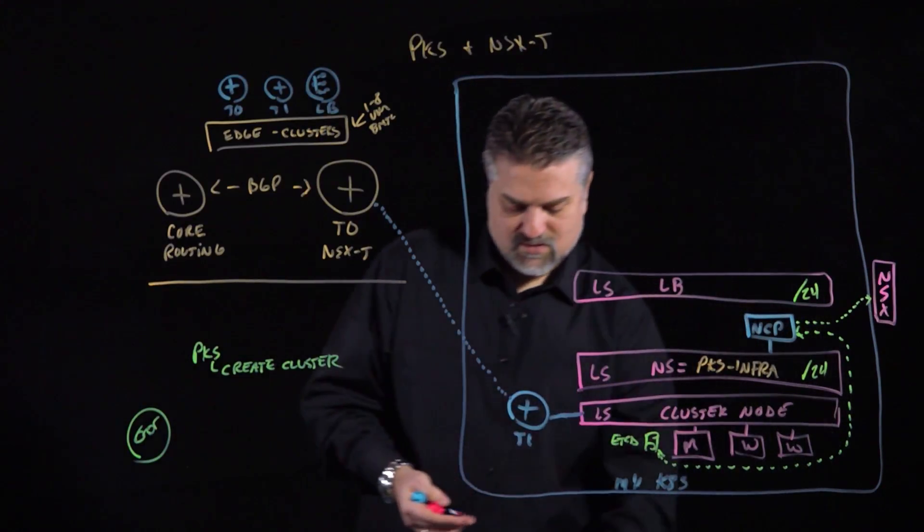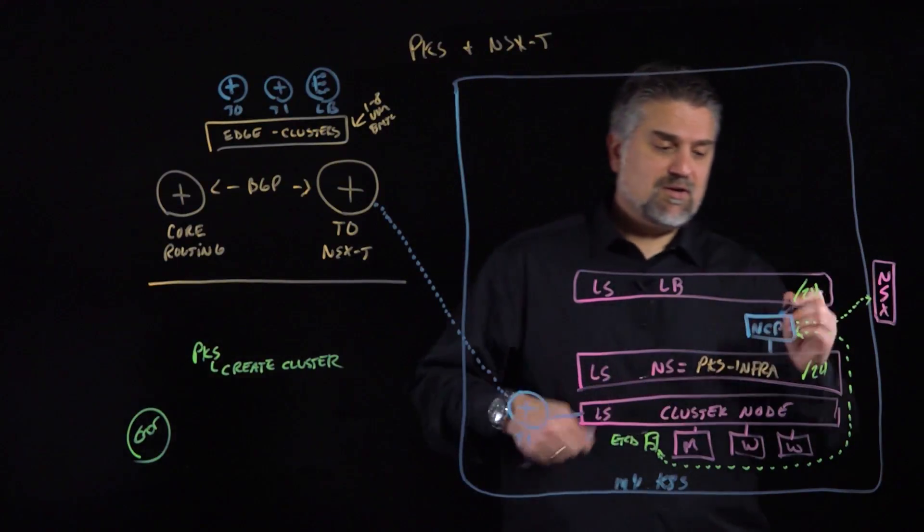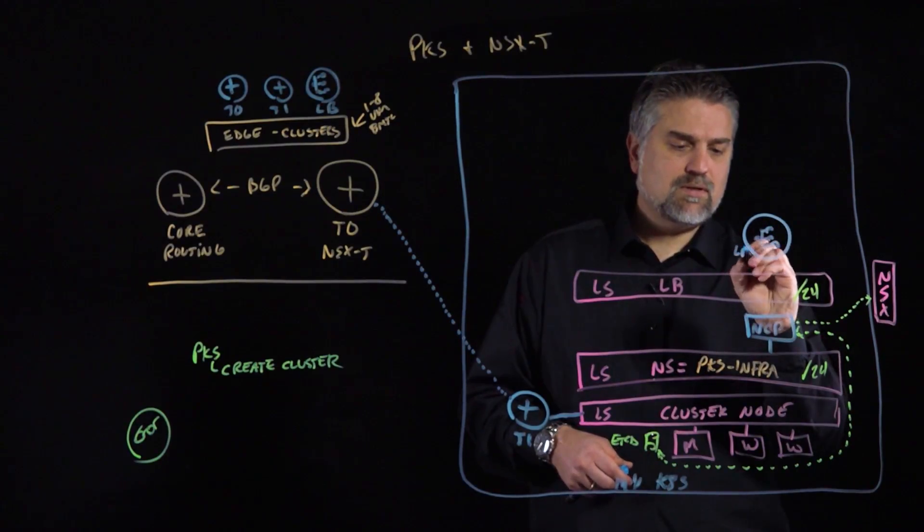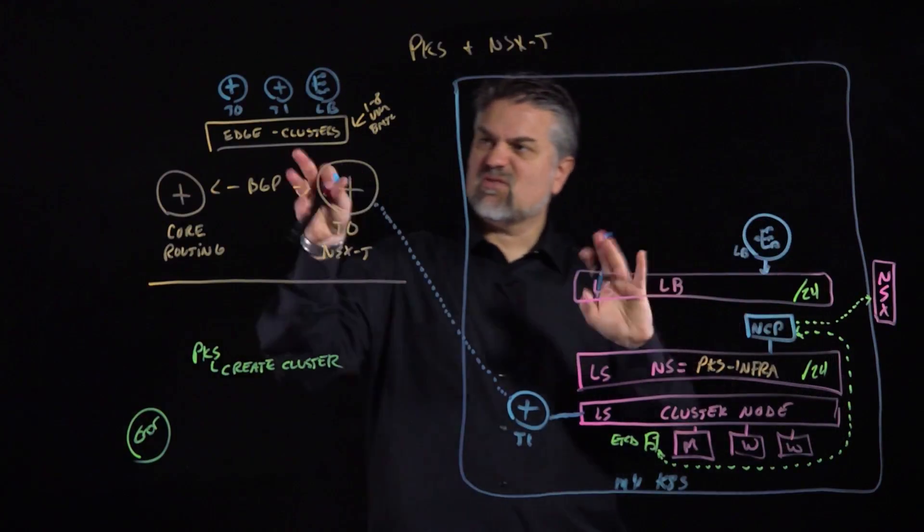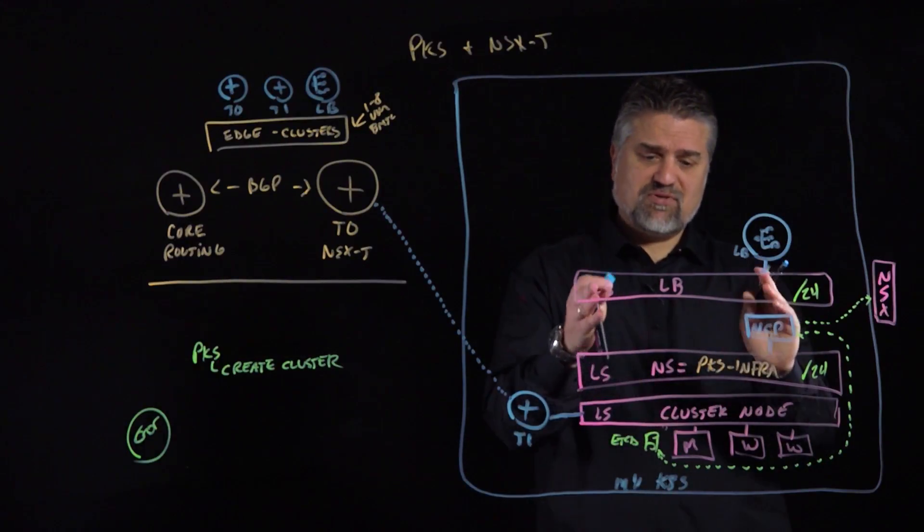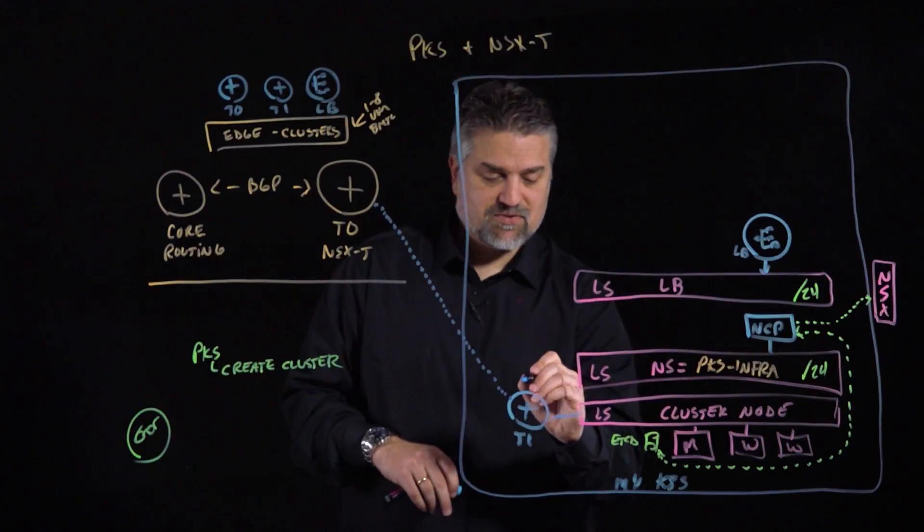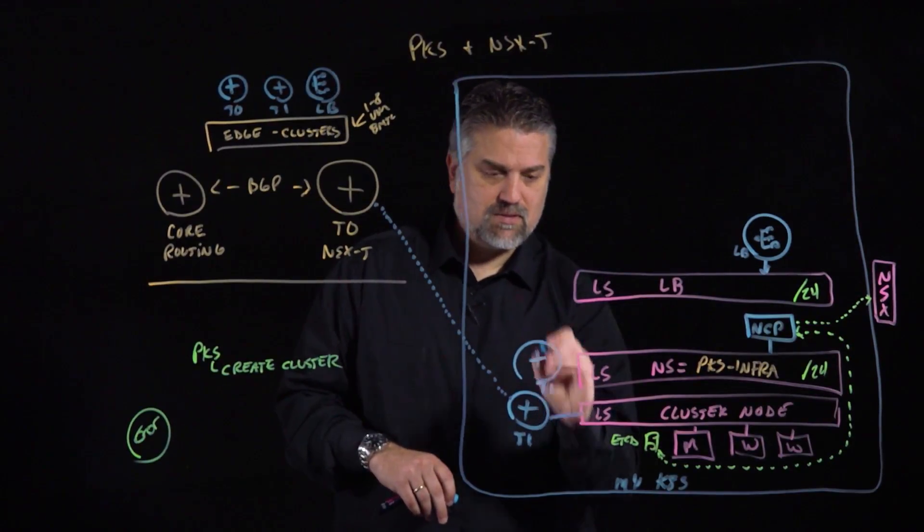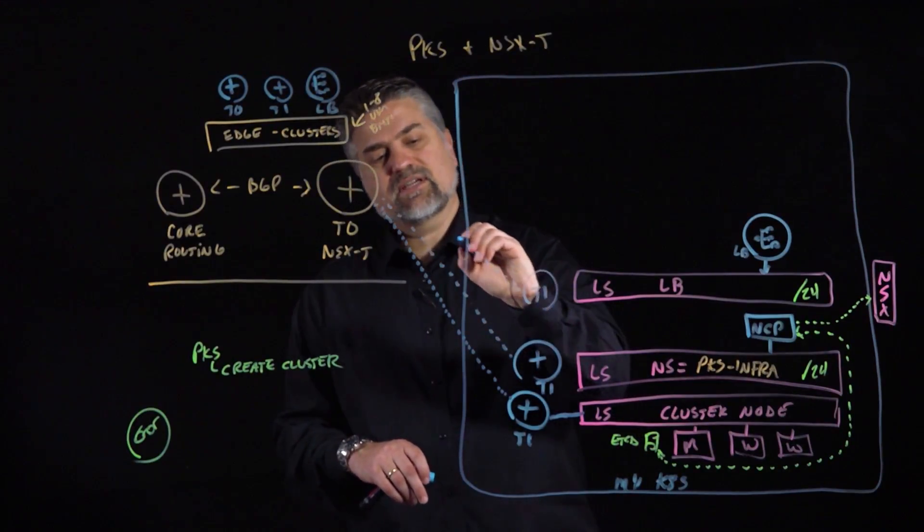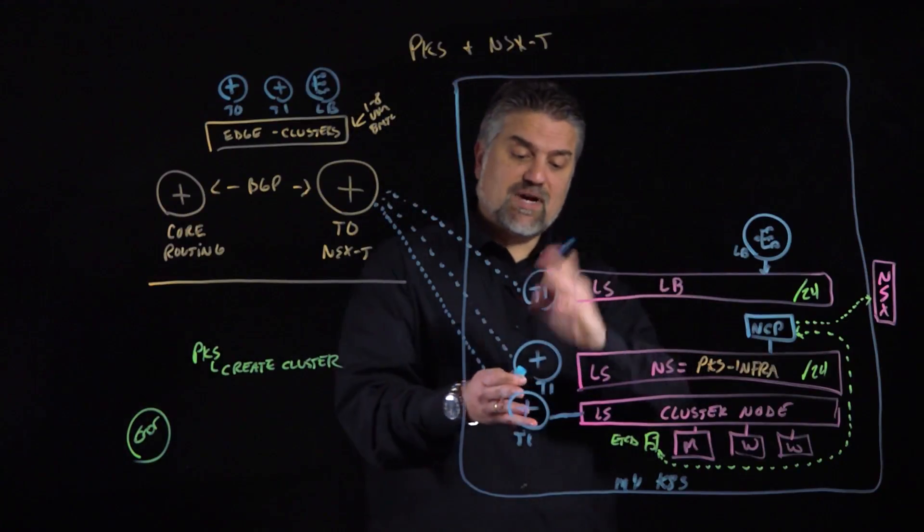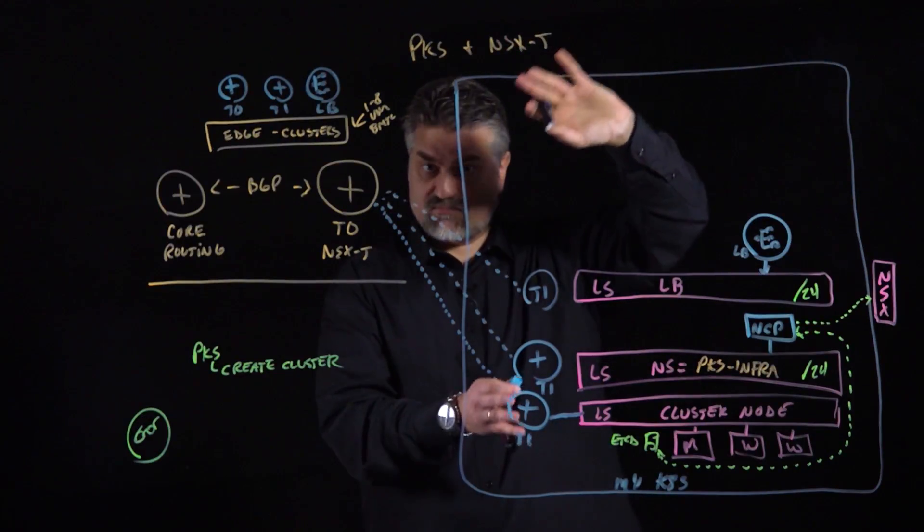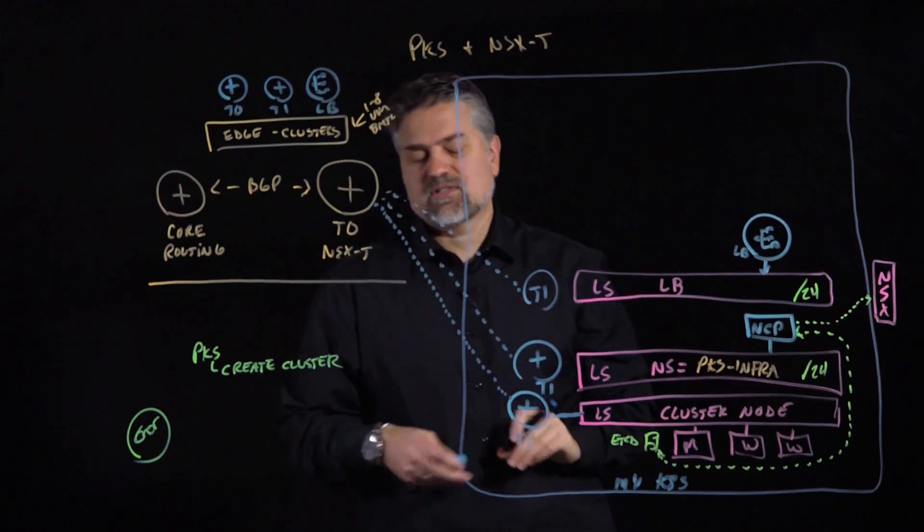I should point out that each one of these logical switches that's created is actually consuming a /24 subnet from a rather large block that we have to support multiple Kubernetes clusters. On this load balancing logical switch, we're also going to have a load balancer, an NSX load balancer, which is a logical construct that's being serviced by our edge cluster out here. Both the load balancing logical switch and the PKS infra logical switch have their own T1 routers.